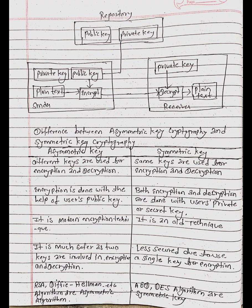RSA and Diffie-Hellman are examples of asymmetric algorithms. AES and DES are examples of symmetric algorithms.